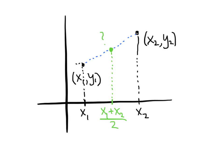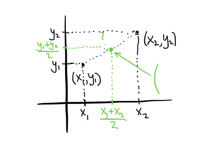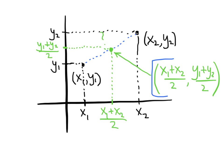We can do the same thing in the y-direction. On the y-axis, here's y1 and here's y2. The y-coordinate of the midpoint is exactly halfway between those two y-values, so we add them together and divide by 2: (y1 + y2) / 2. So the coordinates of this midpoint are ((x1 + x2) / 2, (y1 + y2) / 2). And that's what we call the midpoint formula — the formula we use to find the midpoint between two given points.